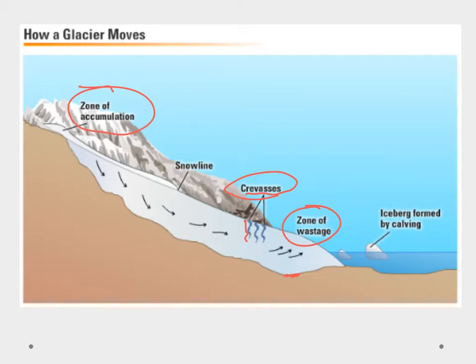At the very end of the glacier, sometimes we'll see iceberg formation by calving, and that's where it'll break — you can have a crevasse, and it'll cause a portion to break off and form an iceberg.